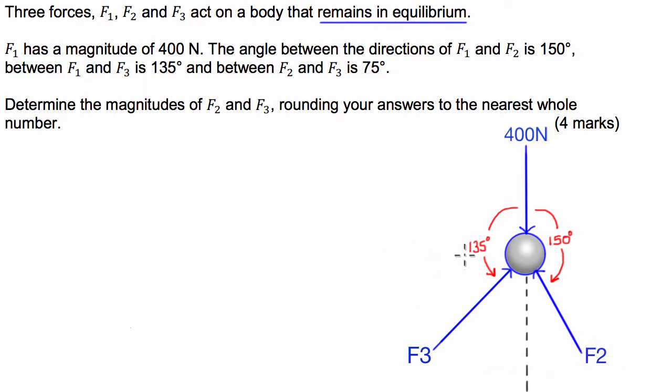On the other hand, the force in the x direction, or the x-axis, has to also be zero. So the force provided to the right by F3 is going to have to be equal and opposite to the force provided to the left of F2.